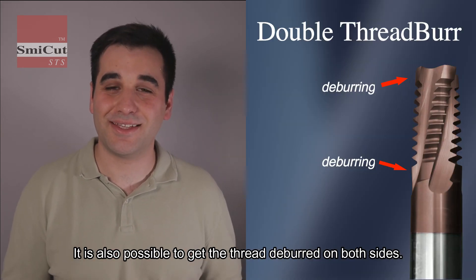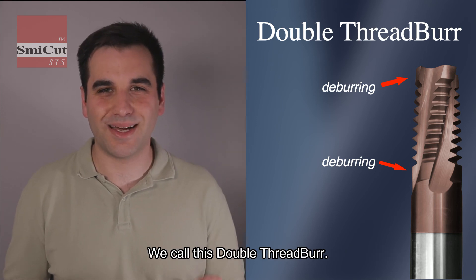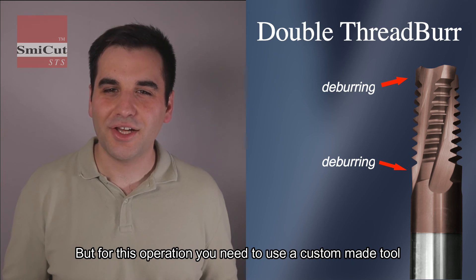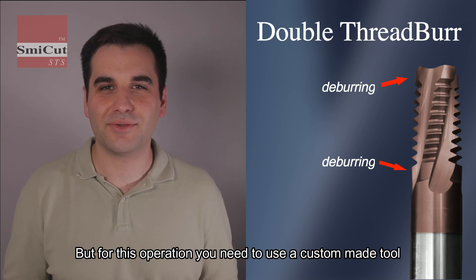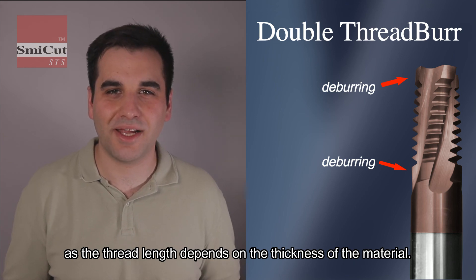It is also possible to get the thread deburred on both sides. We call this double-thread burr. But for this operation, you need to use a custom-made tool as the thread length depends on the thickness of the material.